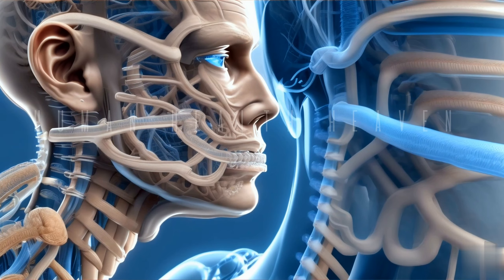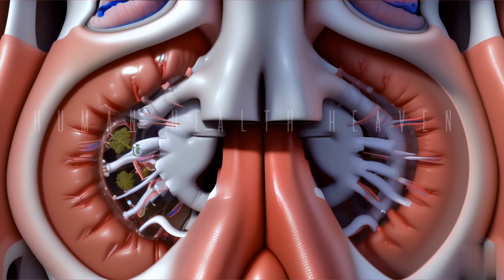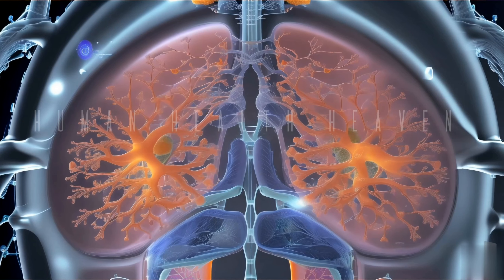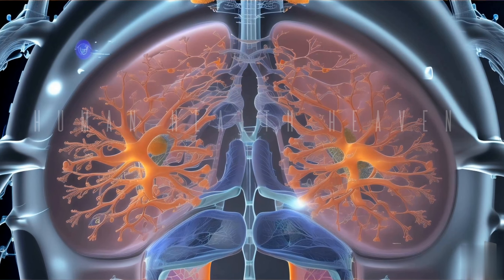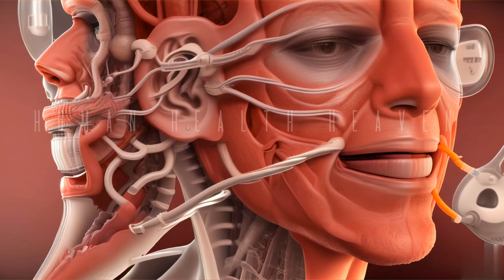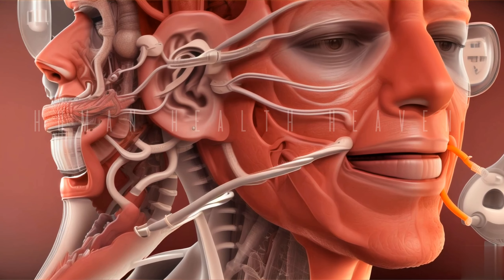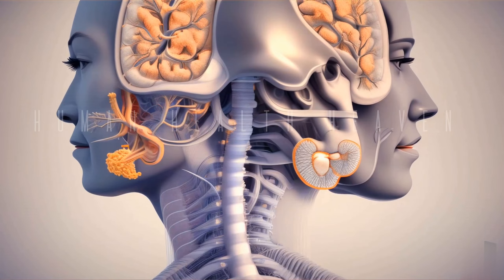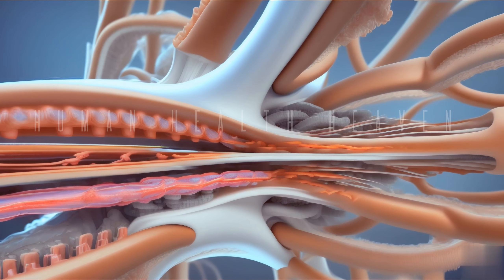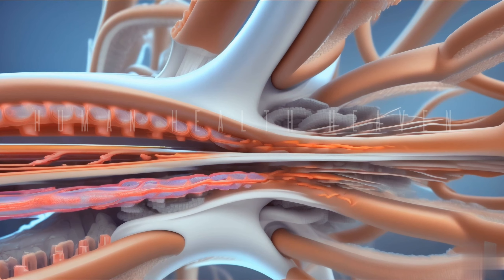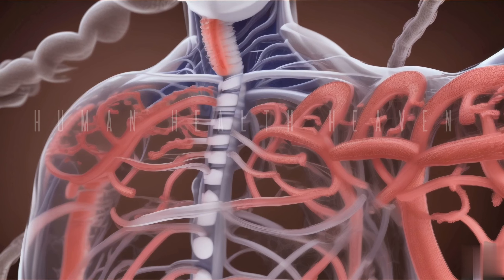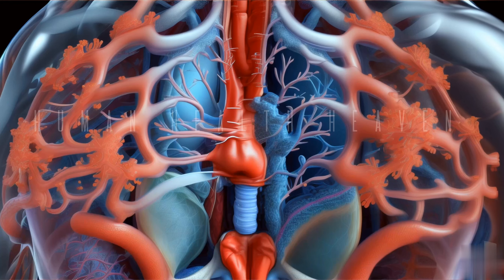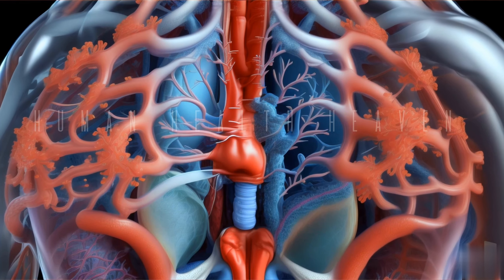The respiratory tract is an important part of the body responsible for carrying air to the lungs. It starts from the nose and mouth and takes air to the lungs, causing respiration. The respiratory tract is divided into two parts: the upper respiratory tract, which includes the nose, mouth, pharynx, and throat, and the lower respiratory tract, which includes the bronchi and lungs. It transports air to the lungs where oxygen is incorporated into the blood and carbon dioxide is expelled. This tract is a major site of infection and transmission of diseases such as common cold, sinusitis, bronchitis, pneumonia, and coronavirus. Therefore, its proper care and hygiene is very important.